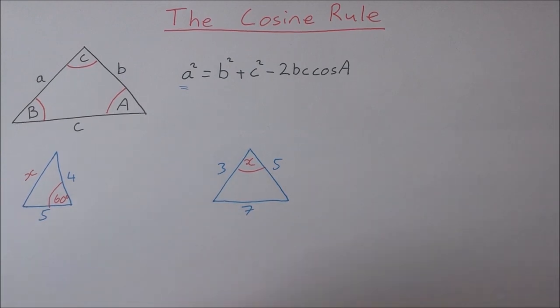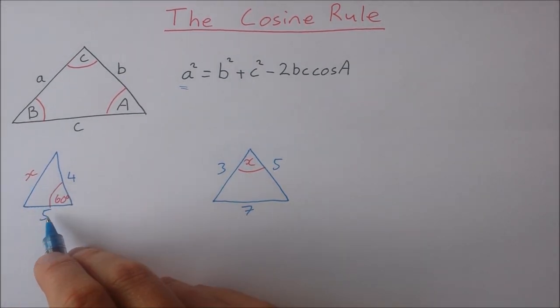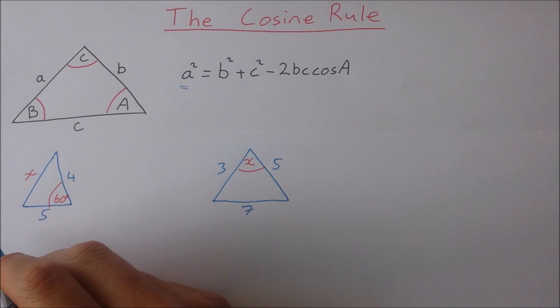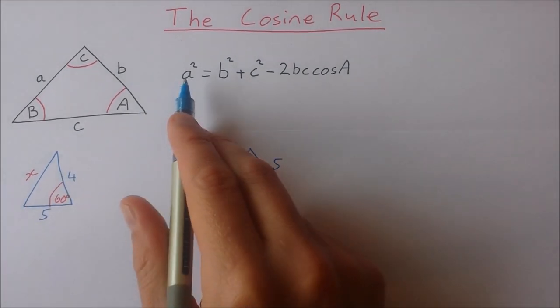So let's take a look at the first one here. So I have 5, 4 and 60 degrees and have an unknown side x. So my unknown side is going to be A.